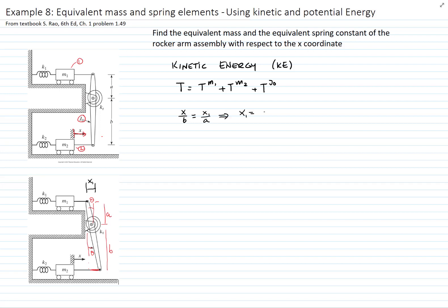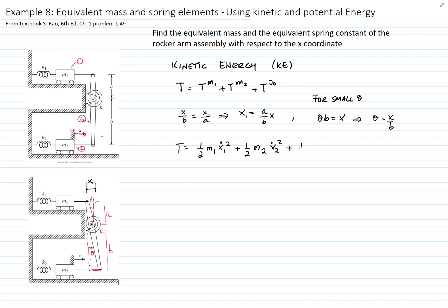Using similar triangles and proportions, we get that X1 equals A over B times X, which is the variable we want to write our kinetic energy in terms of. For small theta, we can also say theta times B equals X, therefore theta in terms of X is X over B. So the kinetic energy for mass 1 is one-half M1 times velocity of mass 1 squared, and for mass 2 it is one-half M2 times velocity of mass 2 squared.